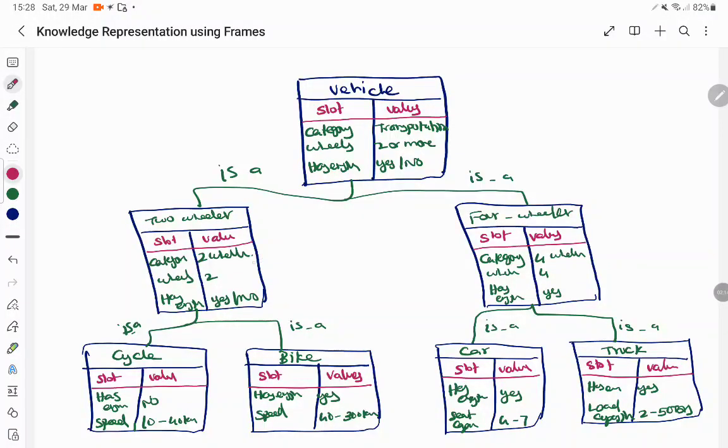For two-wheeler, the category is two-wheeler, number of wheels is two, has engine may or may not. We have cycle and bike, which are types of two-wheelers. The edges connecting each frame denote the relationship, and each frame inherits the property of the parental frames.